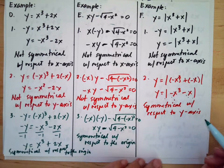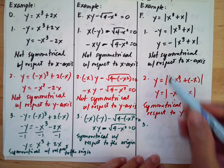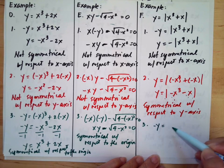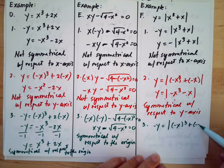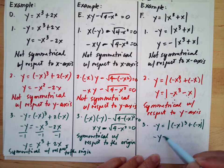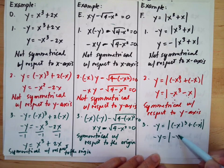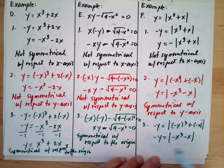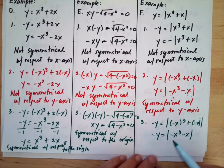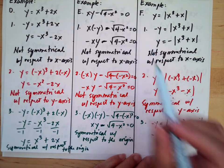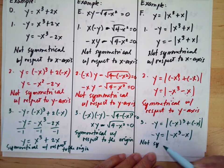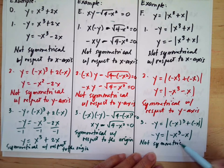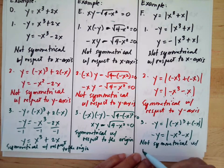For the last example, we substitute negative x and negative y. We get negative y equals the absolute value of negative x cubed minus x. But since the y is negative in the result while it is positive in the original, this equation is not symmetrical with respect to the origin.